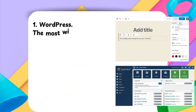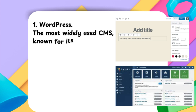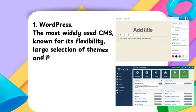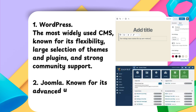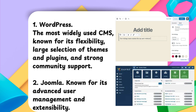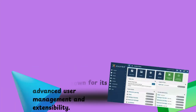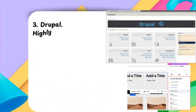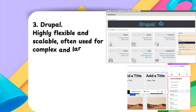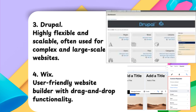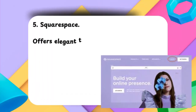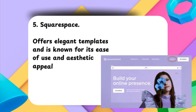Popular examples of CMS software: one, WordPress — the most widely used CMS, known for its flexibility, large selection of themes and plugins, and strong community support. Two, Joomla — known for advanced user management and extensibility. Three, Drupal — highly flexible and scalable, often used for complex and large-scale websites. Four, Wix — a user-friendly website builder with drag-and-drop functionality. Five, Squarespace — offers elegant templates and is known for ease of use and aesthetic appeal.